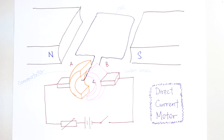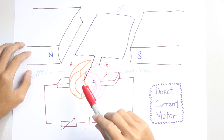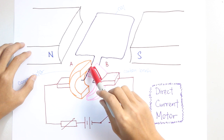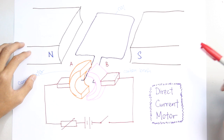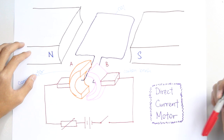For the question — how does the commutator reverse the flow of current every half cycle? The secret here is this gap. I'll explain it now.